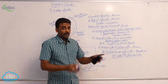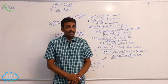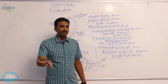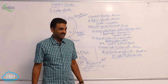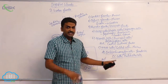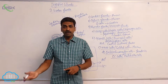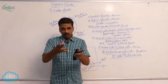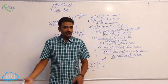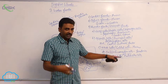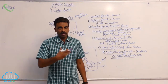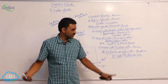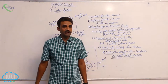Enterochromaffin cells produce serotonin. About 90% of the serotonin in the body is actually produced from the gut by EC cells. EC cells are present in the stomach, small intestine, and large intestine throughout the gastrointestinal tract.